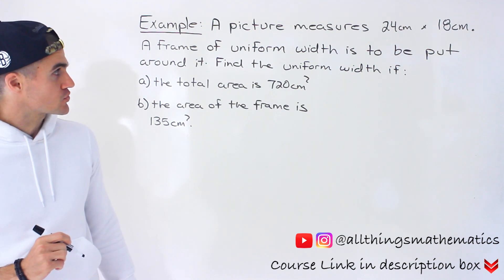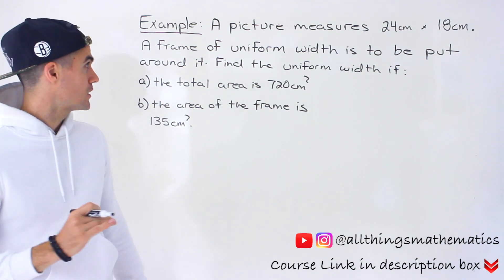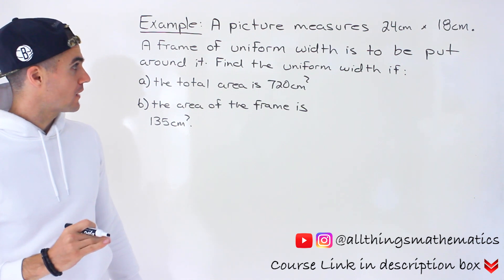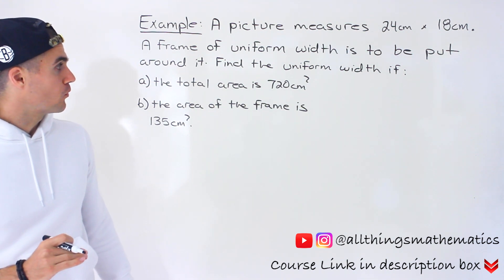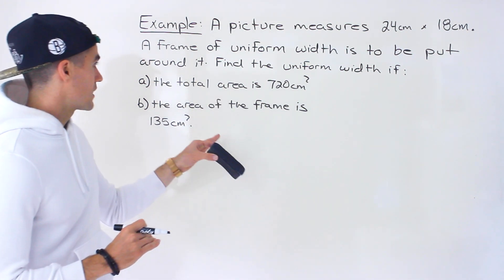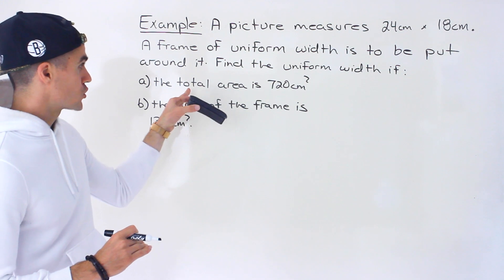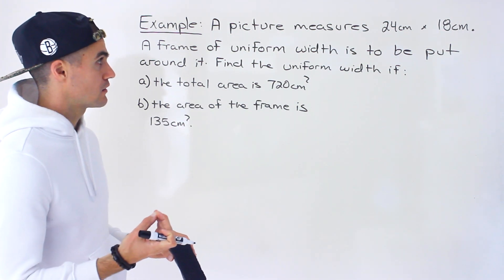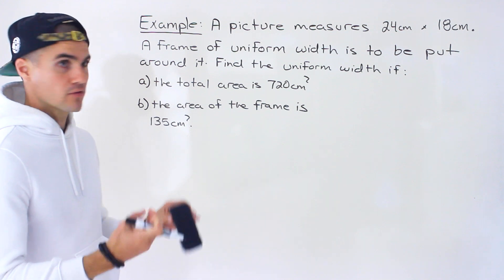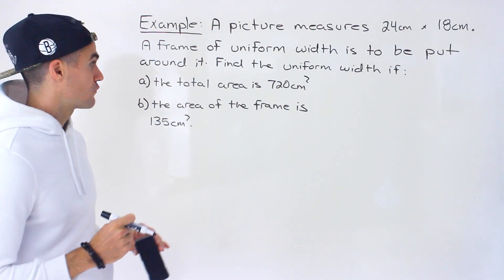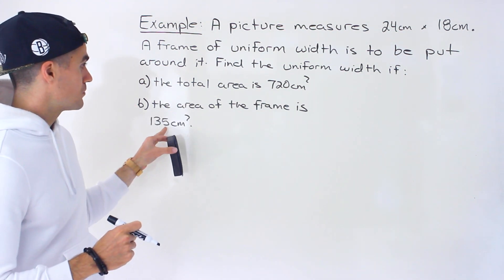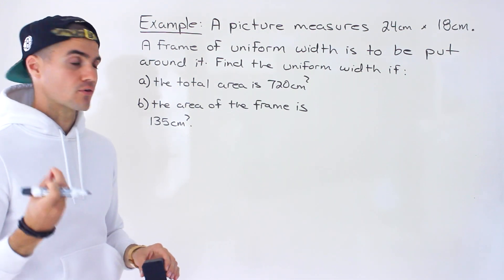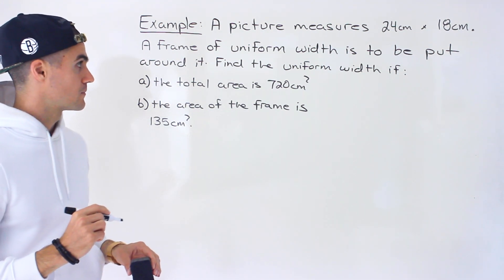A picture measures 24 centimeters by 18 centimeters, and a frame of uniform width is to be put around it. We have to find the uniform width in two different scenarios: in part A, if the total area is 720 centimeters squared — meaning the area of the picture and the frame — or in part B, if the area of the frame is 135 centimeters squared.